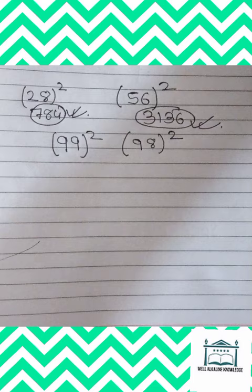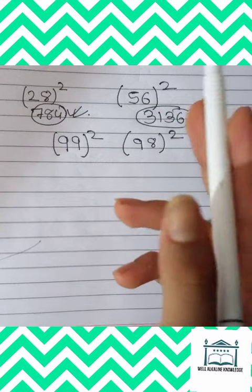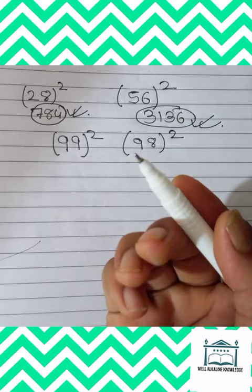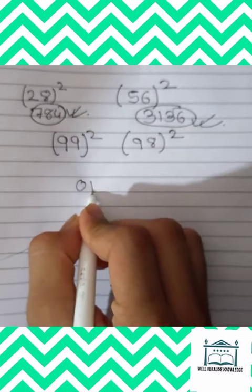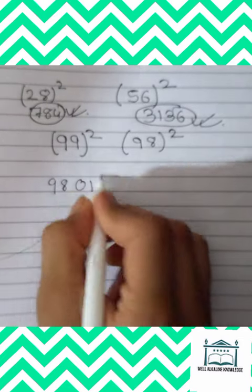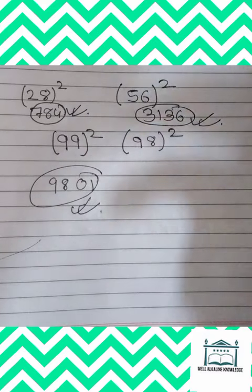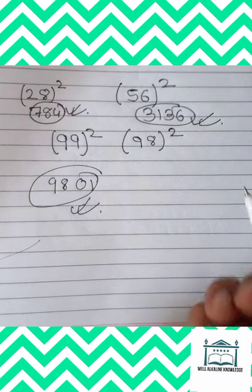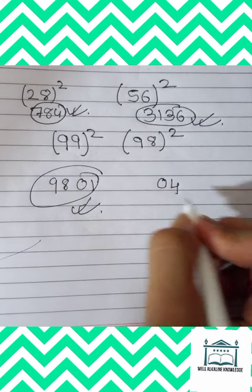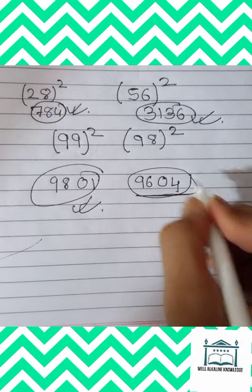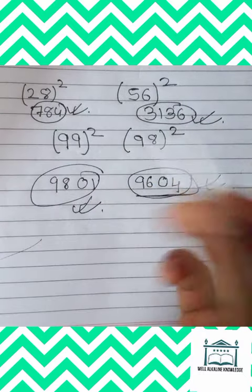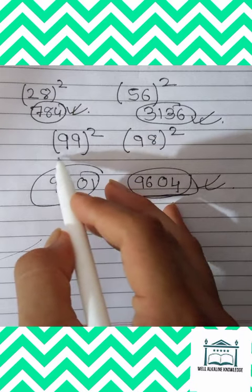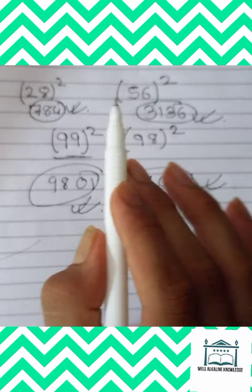So now 99. 99 is more than 50. So let's apply the concept of more than 50. So last 01 and 98. So answer would be 9801. So how easily we are going on with this 99. And a whole last number we can't find, but by this method you can find out.